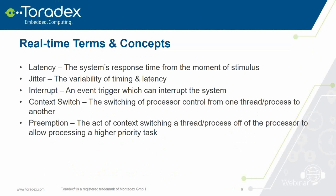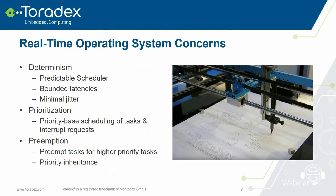Some key terms: latency is a system's response time from the moment of a stimulus. Jitter is the variability of timing or latency. An interrupt is an event trigger which can interrupt the system. A context switch is the switching of processor control from one thread or process to another. Preemption is the act of context-switching a thread off the processor to allow a higher-priority task to use it. Determinism is critical to real-time systems — it ensures repeatability and that hard deadlines can be met every time.